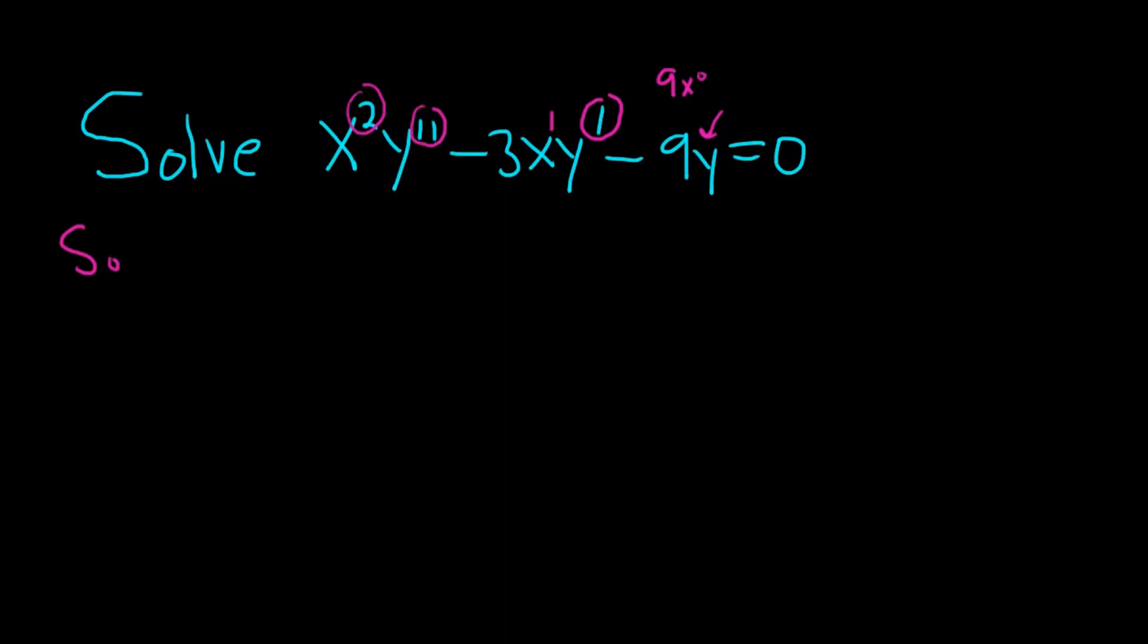Solution. So we start solving Cauchy-Euler differential equations by letting y be equal to x to a power. Then we differentiate this, plug it into our differential equation, and solve for m.